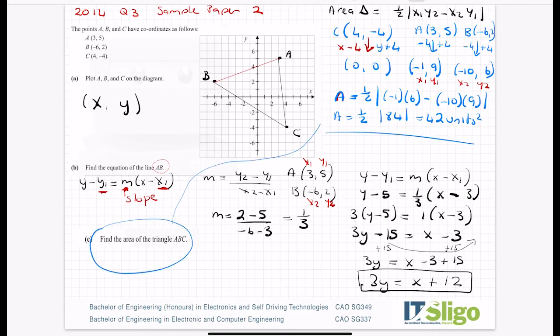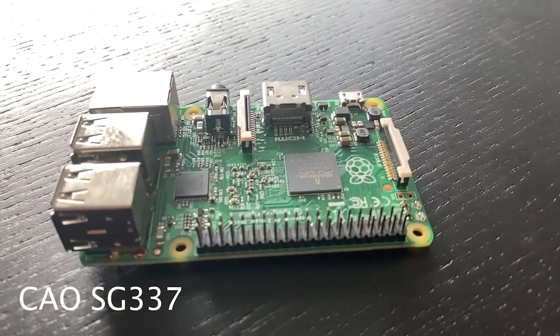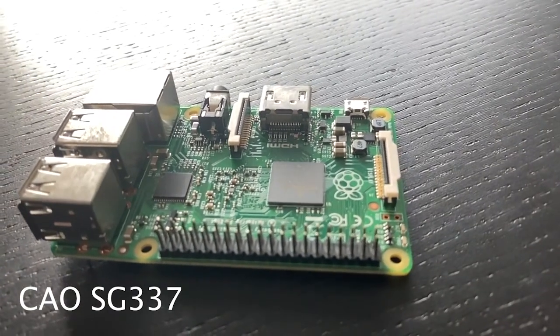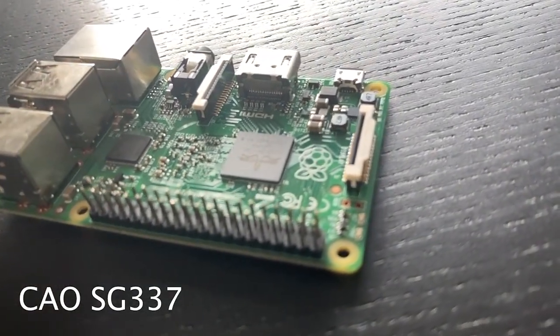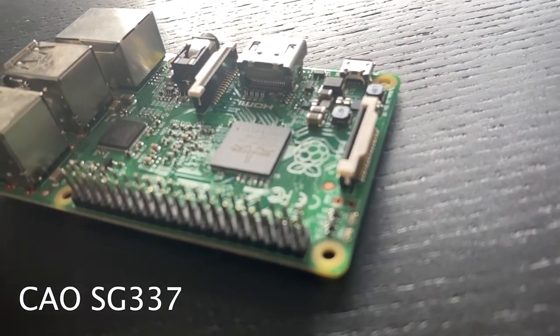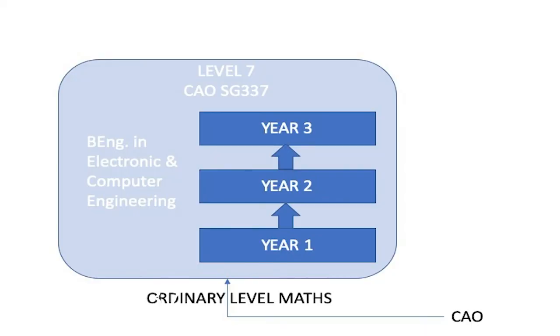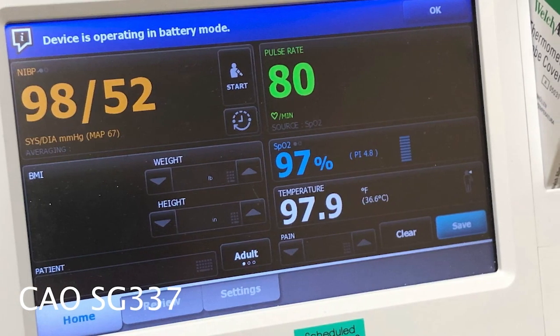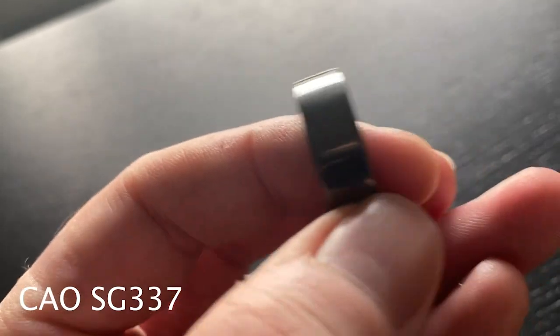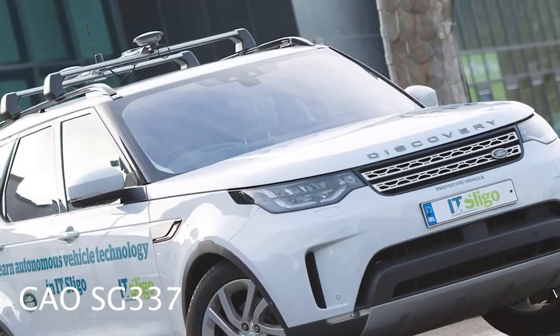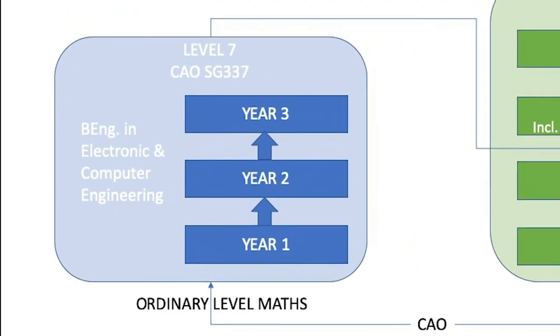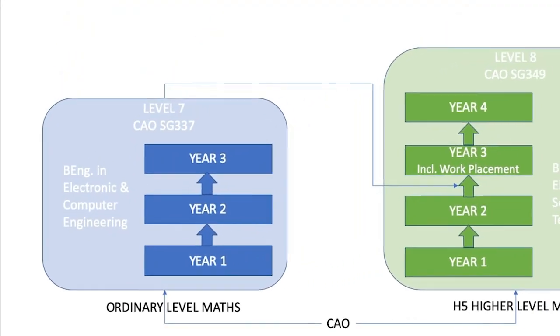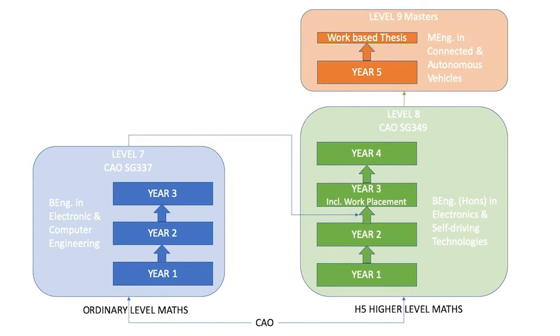So this area of a triangle is up here. If you are interested in technology or engineering but are not doing higher level maths, why not consider our Level 7 in Electronic and Computer Engineering. This is a three-year program that looks at the design and development of embedded electronic systems. These are the medical devices that keeps us healthy, the consumer devices that keeps us entertained, or the controlled systems that keeps us safe on the road. You can then progress onto the Level 8 in Electronics and Self-Driving Technologies and from there to the masters. Check out the link below for more information.